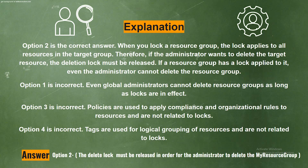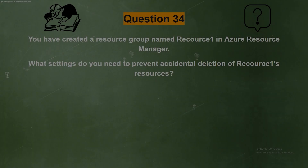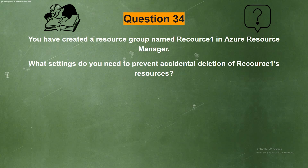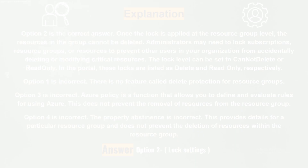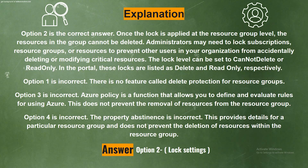Next question. You have created a resource group named 'resource one' in Azure Resource Manager. What settings do you need to prevent accidental deletion of resource one's resources? The options are: option one, deletion protection settings; option two, lock settings; option three, Azure policy settings; option four, property abstinence. The answer is option two, lock settings.